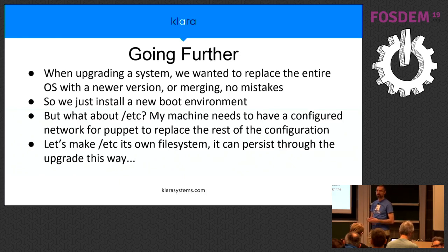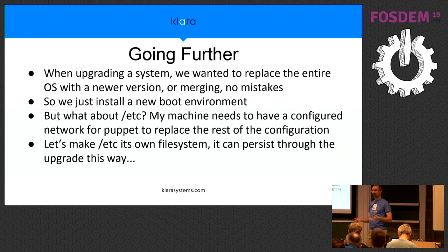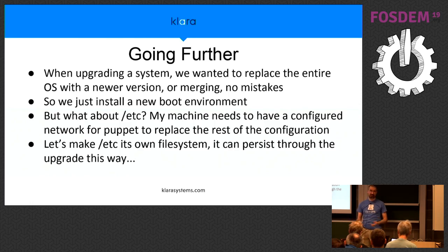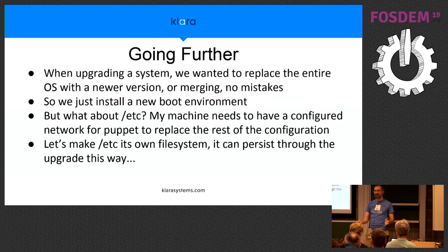When we wanted to deploy servers around the world and upgrade them constantly, we wanted to replace the entire operating system with a newer version without having to deal with merging config files. ETC update or mergemaster made me pull out my hair. Our goal was: just drop down a new version of FreeBSD with all the new config files and not have to merge anything — just overwrite. But some files in ETC actually matter, like the machine needing to know its IP address.